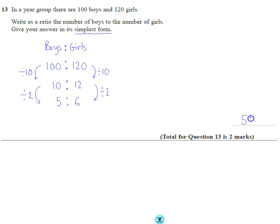So the ratio, for every 5 boys there are 6 girls.